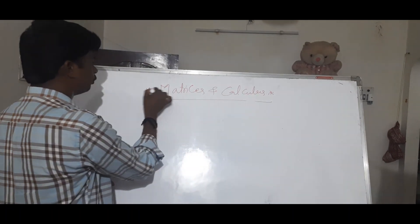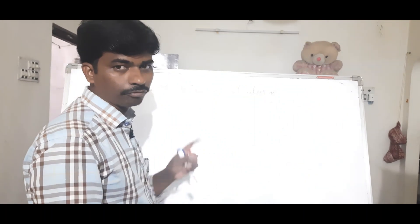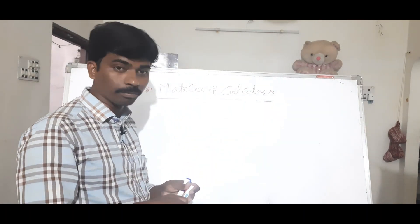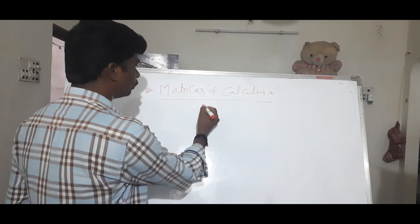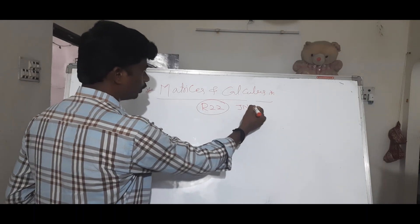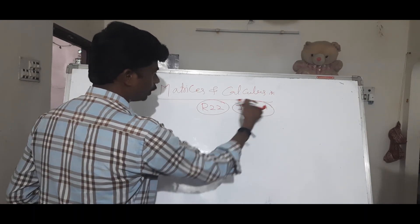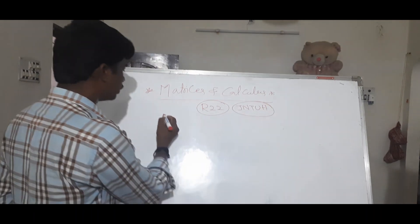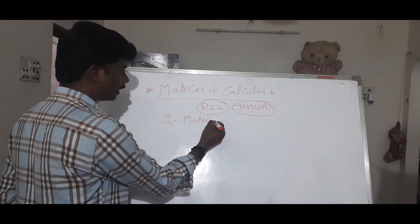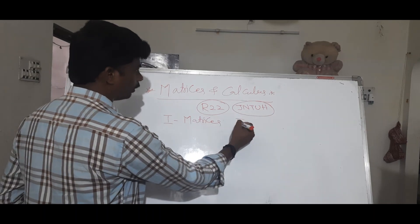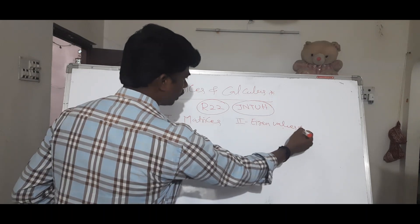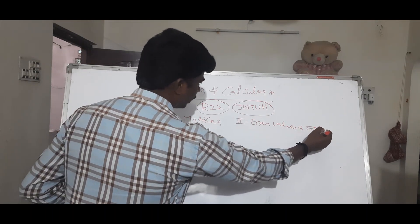The first two units are important topics. This is the R22 syllabus for J into H. The first unit covers matrices, and the second unit covers eigenvalues and eigenvectors.